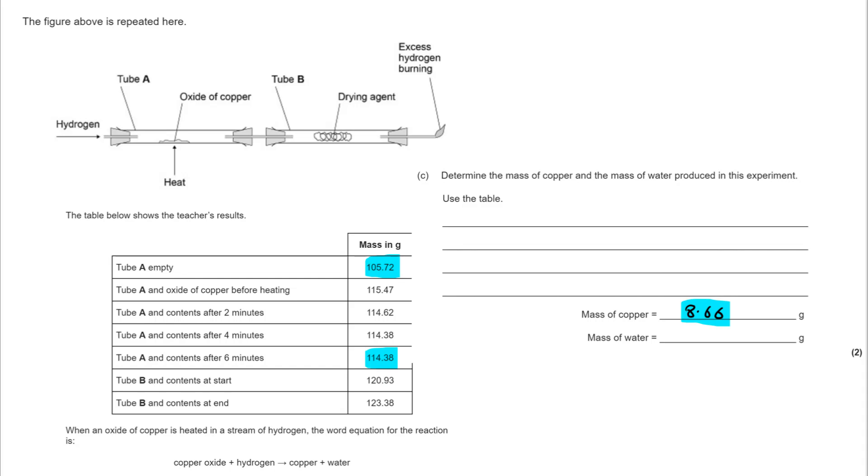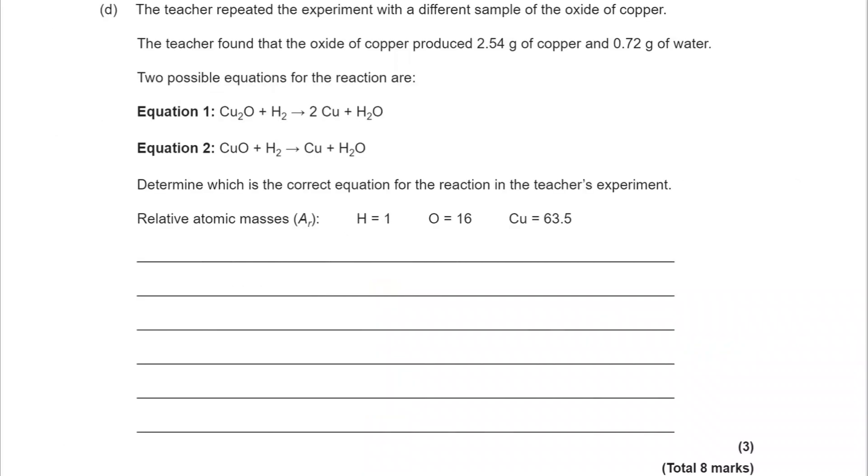For the water, we're looking at what happens in tube B, the drying agent, where it's gone up by 2.45 grams. This has captured the water as it's escaping and held it with the drying agent. So 2.45 grams is the mass of water.